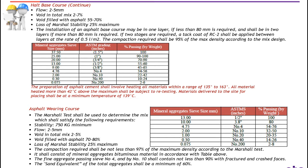Or it may be two layers if more than 8 cm or 80 mm is required. If two stages are required, a tack coat of RC2 shall be applied between layers at the rate of 0.5 liters per meter square. The compaction required shall be 95% of the maximum density according to mix design.